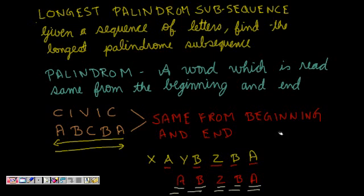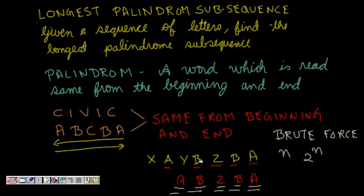First, we can take a brute force method. I will choose all subsets — if the length of the sequence is n, I will choose all subsets and try to see if each is a palindrome by checking if the first and last letters match, the second and second-last match, and so on. This is an exponential algorithm of two to the power of n, and we want something smaller and more efficient.